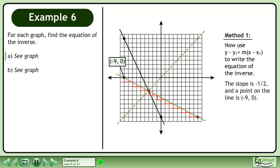The slope is negative one-half and a point on the line is x equals negative 9, y equals 0. Plugging in values for the slope and point gives y minus 0 equals negative one-half times the quantity x plus 9. Simplify to get y equals negative one-half times the quantity x plus 9. Multiply through the brackets to get negative one-half x minus nine-halves. We can replace y with f-inverse since the inverse graph is a function.